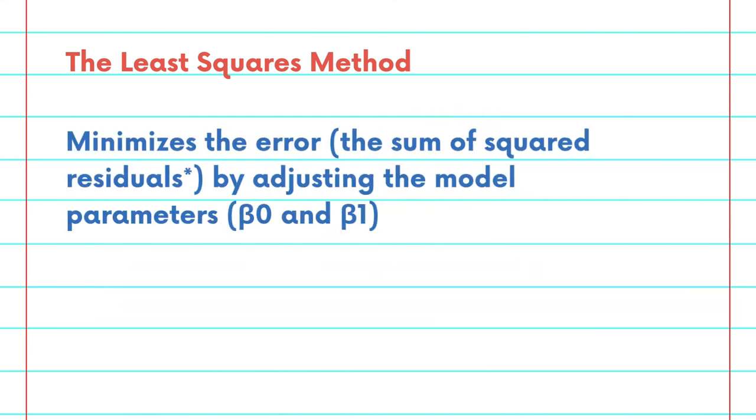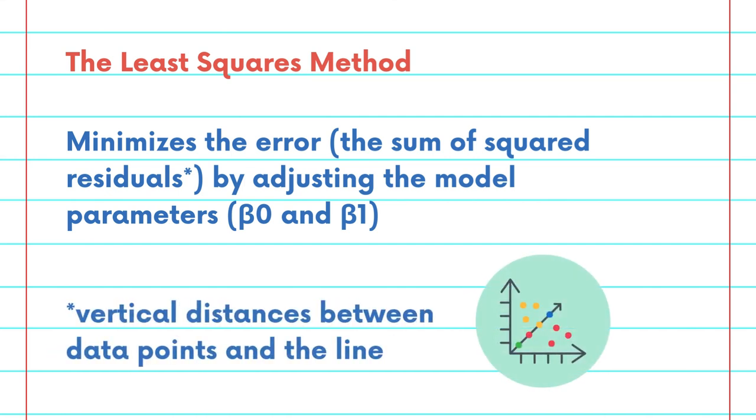It minimizes the error, which is the sum of squared residuals, defined as the vertical distances between the data points and the line, by adjusting the model parameters, which are beta 0 and beta 1, to help us find the best beta 0 and beta 1 that could lead to the least squared error.